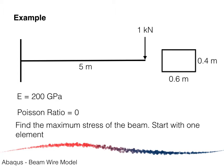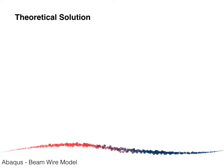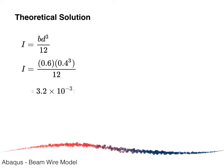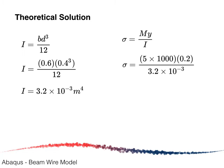We start with one element. For the theoretical calculation, we first calculate the second moment of area. Given the width of 0.6 meters and depth of 0.4 meters, the second moment of area is 3.2 times 10 to the power of minus 3 meters to the power of 4. The stress is given as moment times y divided by the second moment of area. The moment is 5 times 1000, y is 0.2 (distance from neutral axis to surface), giving a maximum stress of 312.5 kilopascal.